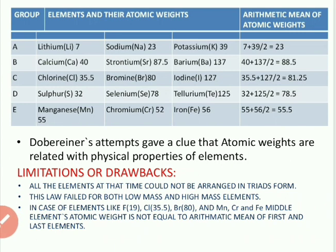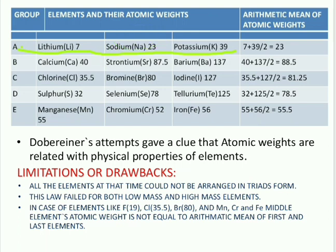Now let us see these triads. These are arranged according to groups. Group A is lithium, sodium, and potassium. In this group, the second element is sodium, whose atomic weight is 23. The first element, lithium, has atomic weight 7 and potassium has atomic weight 39. If we take the arithmetic mean of lithium and potassium, it is 23, which is exactly equal to the atomic weight of sodium.